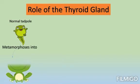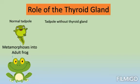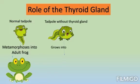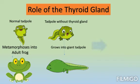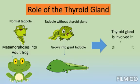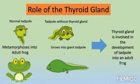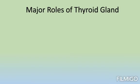What is the role of the thyroid gland? In an experiment, we bring a normal tadpole that has a thyroid gland. We notice that this tadpole undergoes metamorphosis, which means it transforms into an adult frog. But if we remove the thyroid gland of this tadpole, it will not become an adult frog but will transform into a giant tadpole. This shows that the thyroid gland is involved in the development of a tadpole into an adult frog.